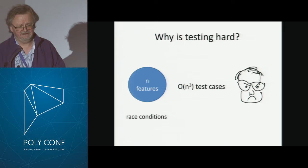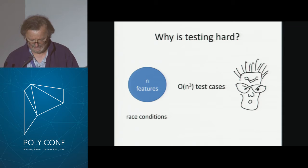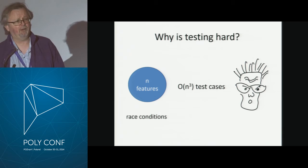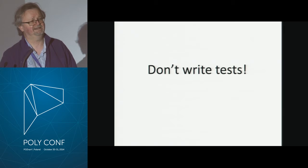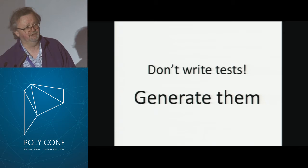And so far we haven't even mentioned race conditions. Race conditions are, by definition, an interaction between at least two features, and they don't even appear every time you run a test. This is hair-tearingly difficult. This is the problem with testing — you can't test everything. When are you going to stop? So, what's the answer? Don't write tests.